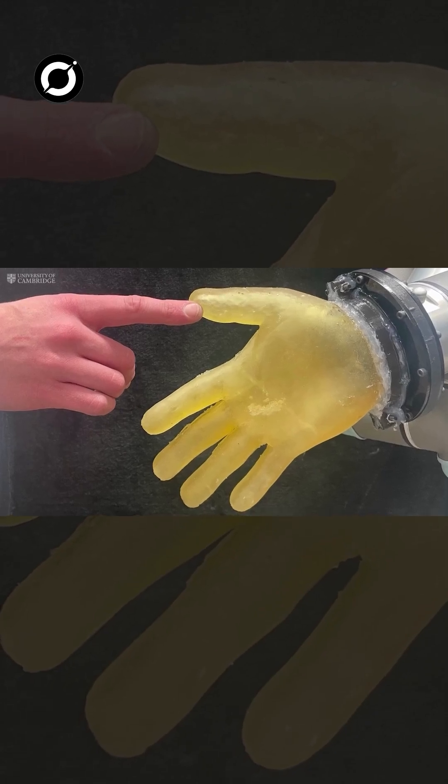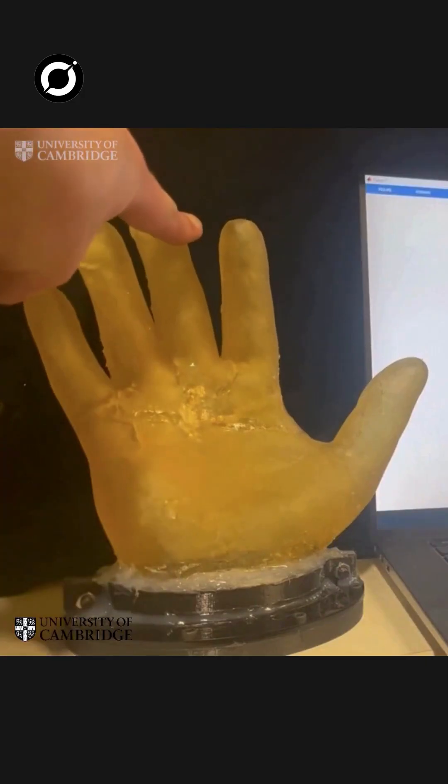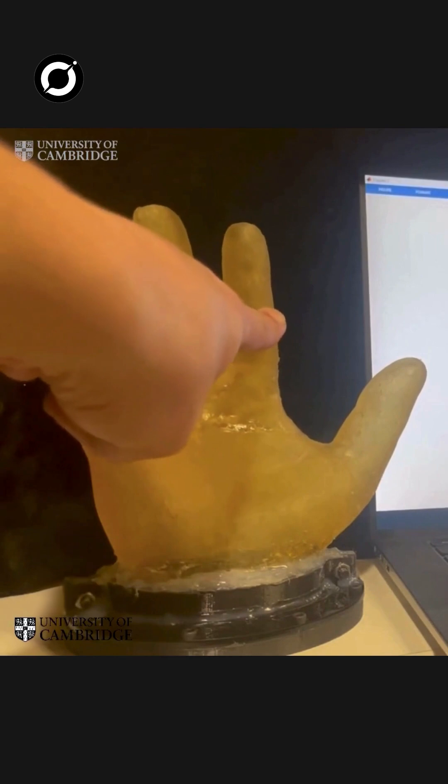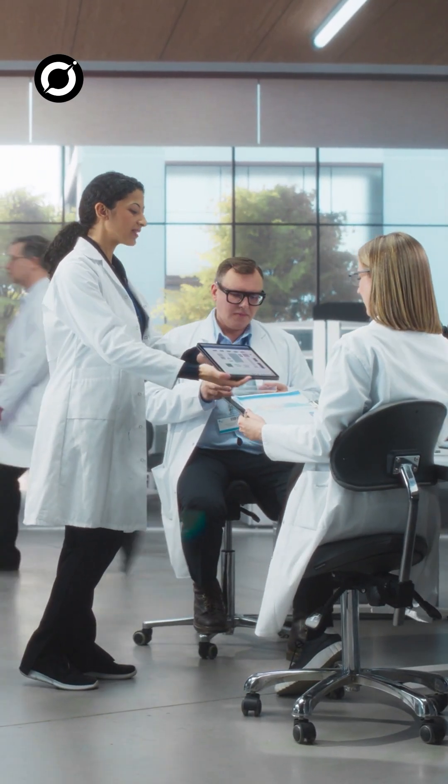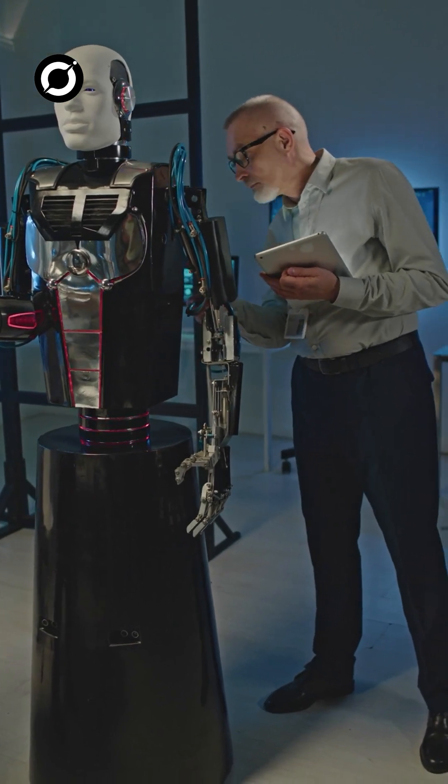Scientists have developed artificial skin for robots that can sense heat, pain, and pressure, mimicking human touch. This breakthrough, led by researchers at the University of Tokyo, brings robots closer to human-like interaction and safety.